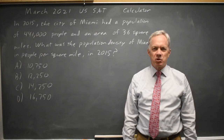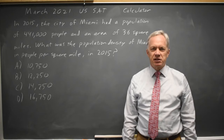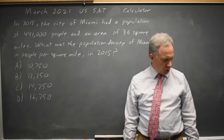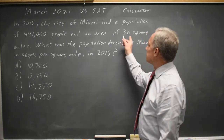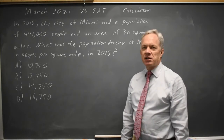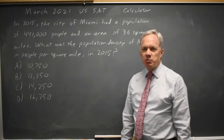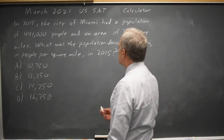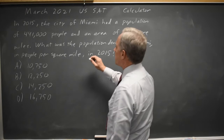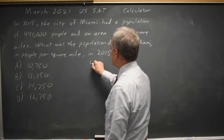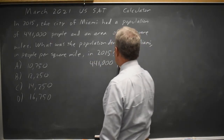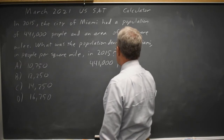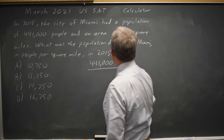I'm Dr. Roger, and this question is from the March 2021 U.S. SAT calculator section. College Board gives us the population of Miami and the area in square miles and asks for the number of people per square mile. To get people per square mile, you divide people by square miles.